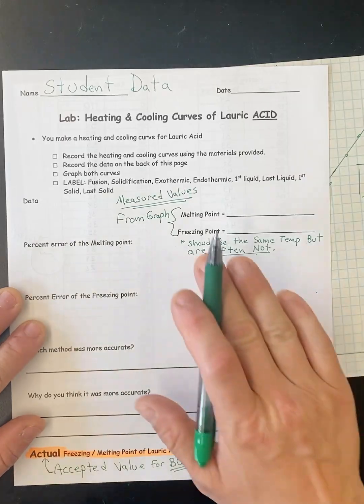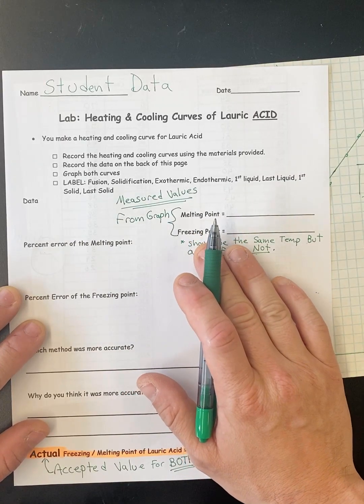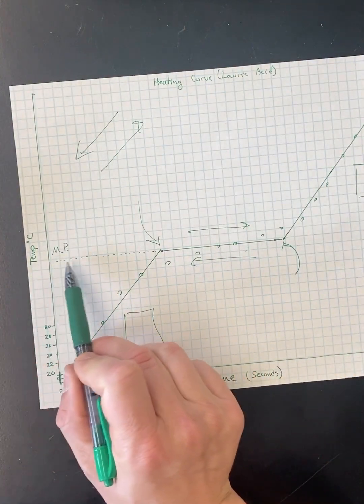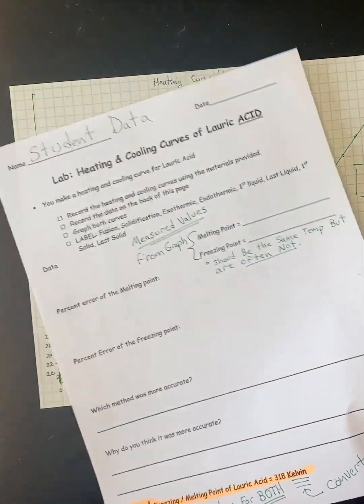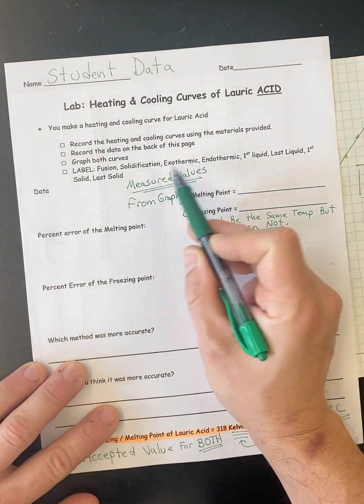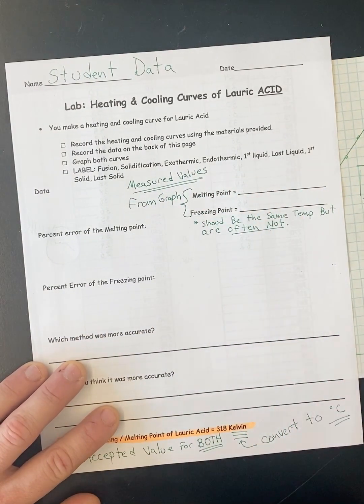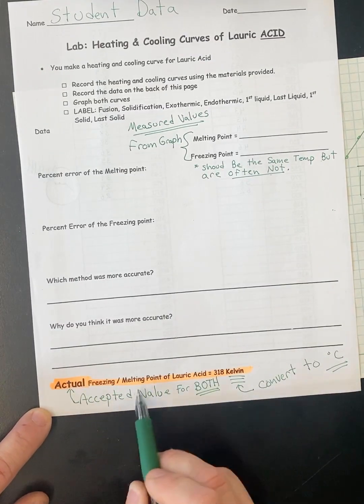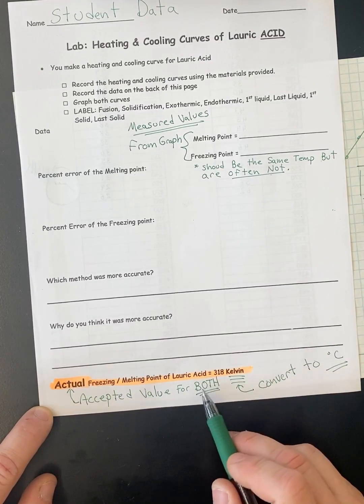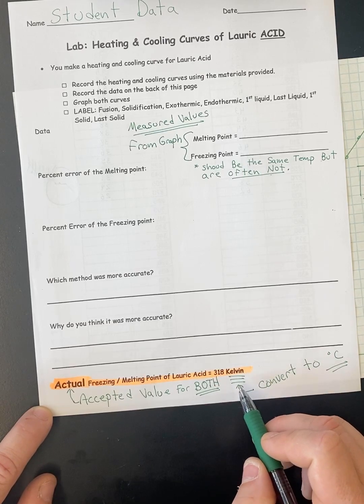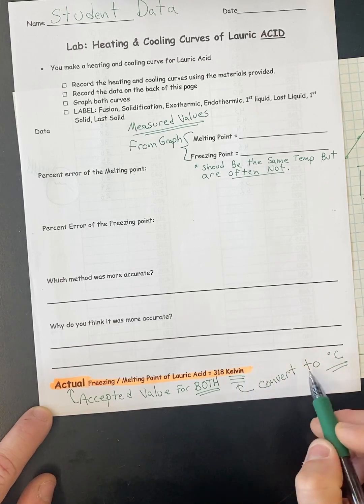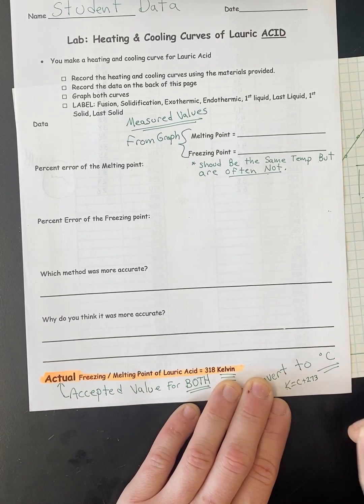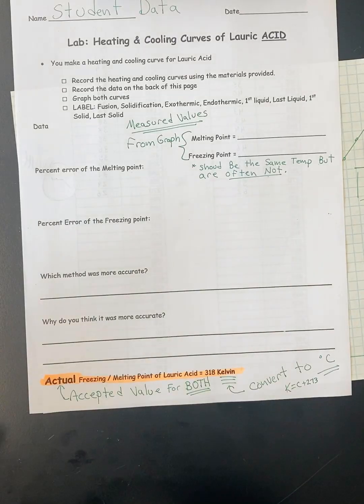But either way, you're going to take your melting point that you got from your lab and your freezing point that you get from your lab. And again, you have to identify it by figuring out where the flat part is and bringing the temperature over, right? And you're going to write them in here. Those are going to be the measured values because someone did it. You didn't, but a student did it. And then at the very bottom, it says the actual freezing point. So that's the accepted value. And it's for both because they should be the same. And so this is going to be the accepted value, but it's in Kelvin. You're going to have to convert to Celsius, K equals C plus 273. These numbers are in Celsius, so you're fine there.